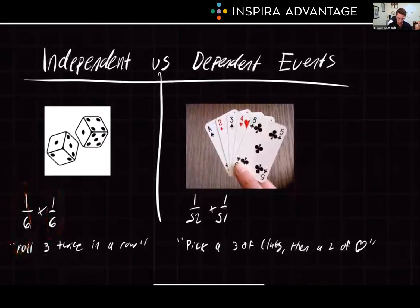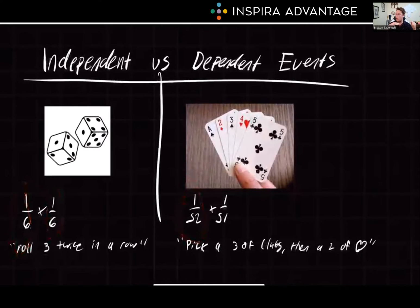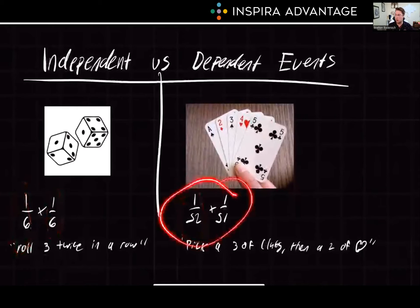Whereas for dependent events like the cards, if we start with a full deck of 52 cards and draw one card without putting it back, our denominator is now 51. So we're going to have a higher probability of that second event happening than the first. But if we need them to happen sequentially, we still have to multiply those probabilities together.